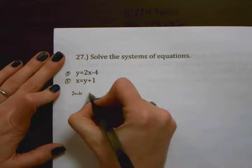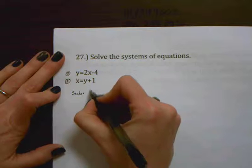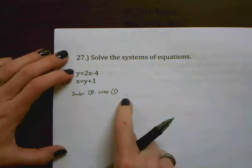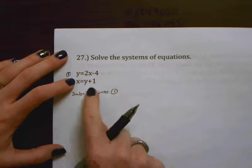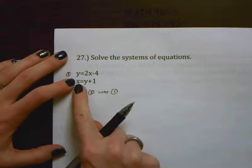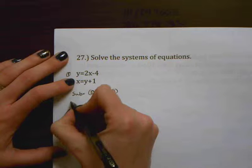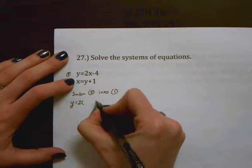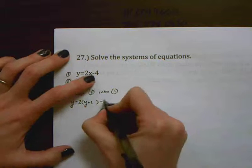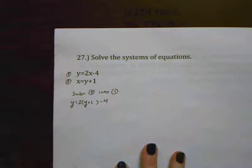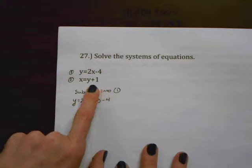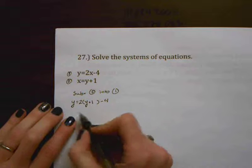So I'm going to start by substituting equation 2 into equation 1. So I'm going to rewrite this equation with instead of writing in x right here as 2 times x I'm going to replace it with y plus 1 because I know that x equals y plus 1. So this becomes y equals 2 and instead of writing x there I'm writing y plus 1 and then I've got minus 4. Okay so what I have then is y equals 2 times x because remember x equals y plus 1 and then minus 4.